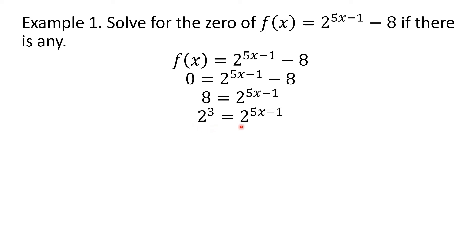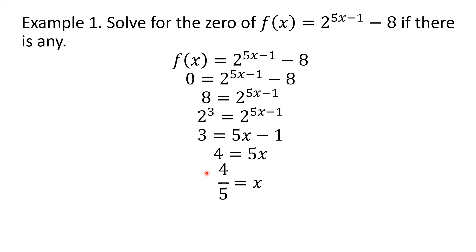Since the bases are both 2, the equation tells us the exponents are also equal, so we equate them: 3 = 5x − 1. This is now linear. Using APE, we add positive 1 to both sides to get 4 = 5x. Then using MPE, we divide both sides by 5, giving us x = 4/5. So the zero of the function is 4/5.